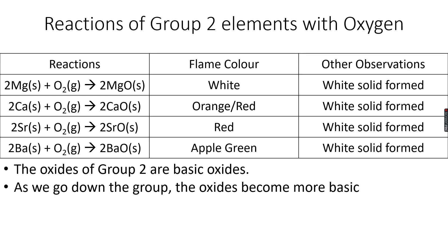There is something called the flame color, which is very important. When you burn these elements, or when you put a compound of these elements over a Bunsen burner flame, for magnesium or its compounds you will get a white flame color. For calcium and its compounds, you will get an orange or red flame color — it's difficult to distinguish between the two, so I've written both; the mark scheme will give you the more accurate color. Strontium and its compounds give a red color, and barium and its compounds give an apple green color over a Bunsen flame.